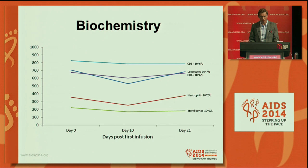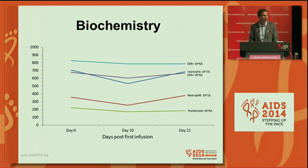A feature of HDAC inhibitors is that many of them induce disturbances in the white blood cell compartment. We monitored CD8 cells, CD4 cells, leukocytes, neutrophils, and thrombocytes in these patients. Collectively, there is an initial decline within the first 10 days in all five parameters. However, this reverts more or less to baseline seven days following the last infusion.